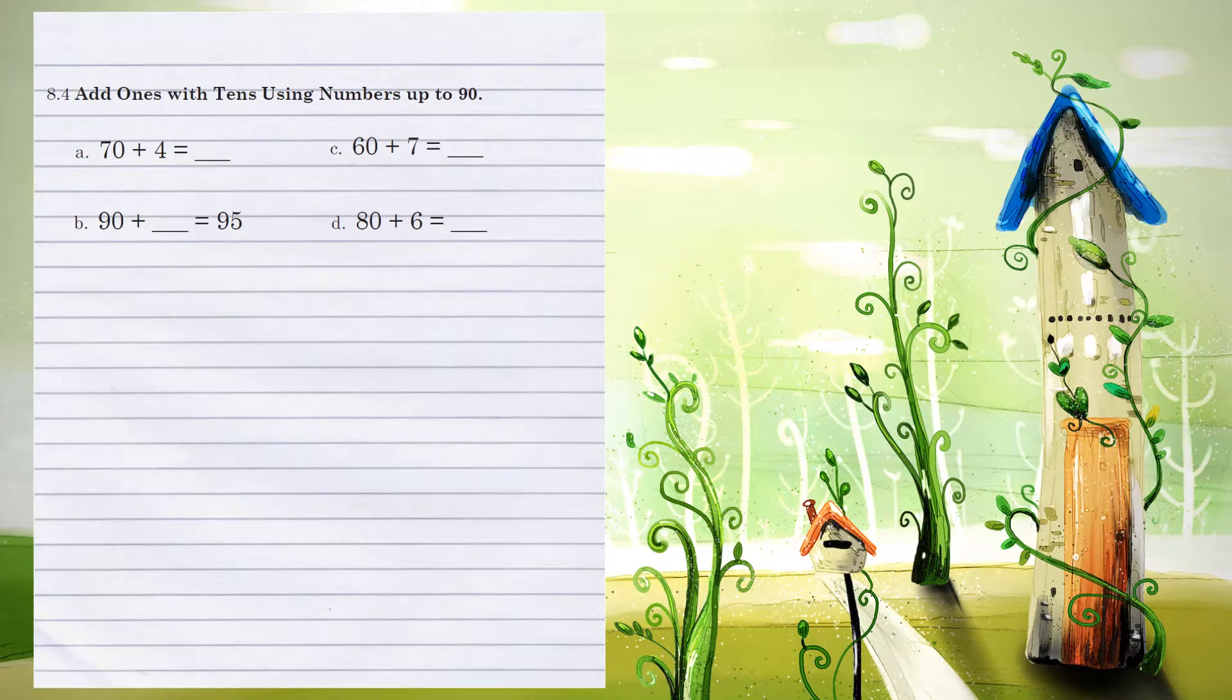Unit 8.4, adding 1s with 10s using numbers up to 90. Example A, 70 plus 4. We combine together our two 1s position. 0 plus 4 gives us 4. We combine our 10s, which is only one number. So we bring over the 7 for an answer of 74.